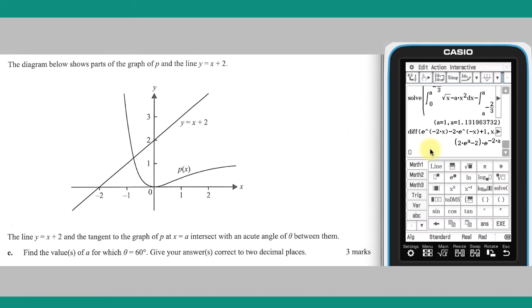Part E involves angles formed by the line Y equals X plus 2 and the tangent to the graph of P at X equals A. The line Y equals X plus 2 makes an angle of 45 degrees with the X axis. If the angle between the line and the tangent is 60 degrees, then the angle between the tangent and the positive X axis is 105 degrees.